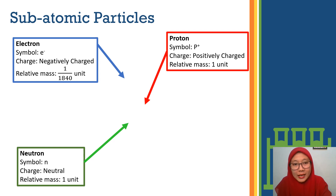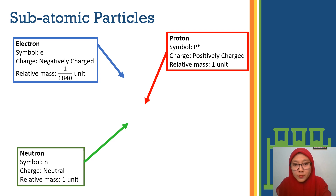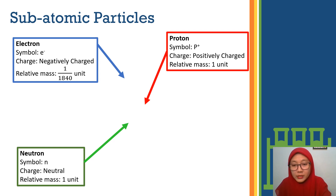The atomic structure can be divided by subatomic particles. What are the subatomic particles? Subatomic particles are the electron, proton, and also neutron.